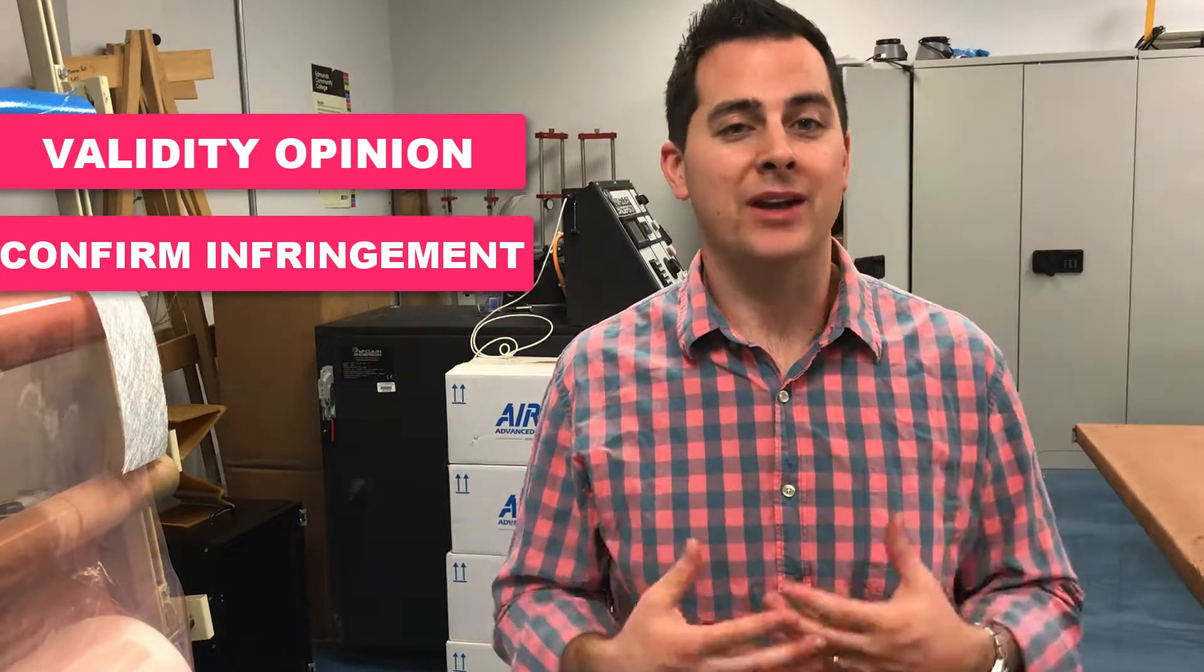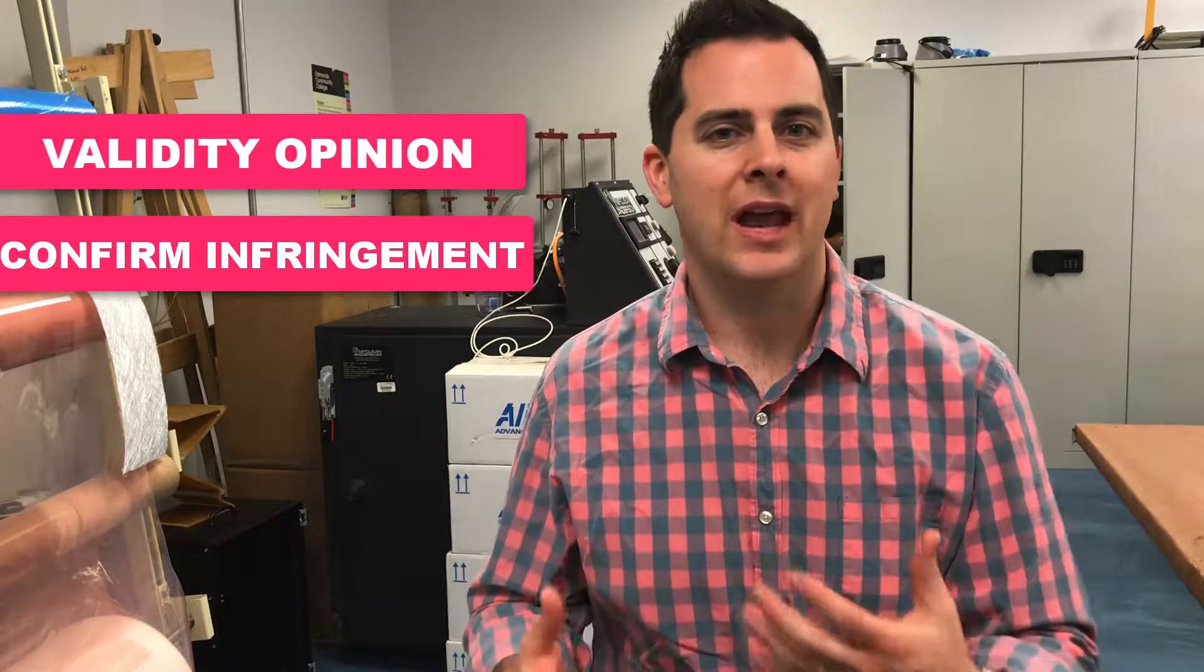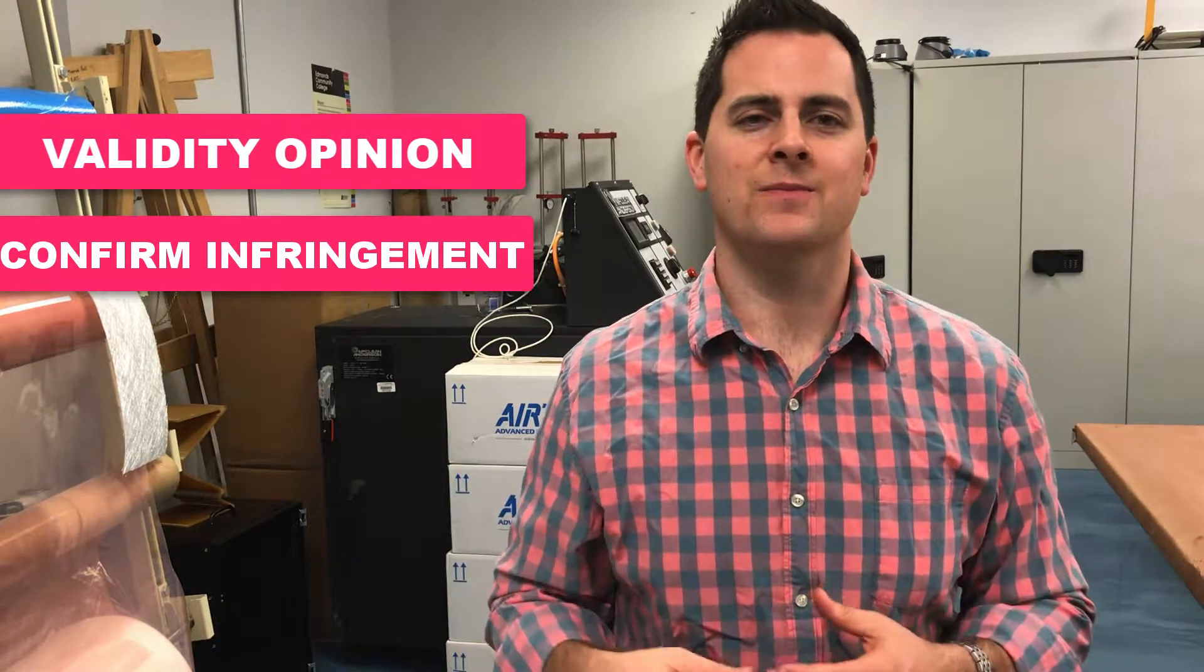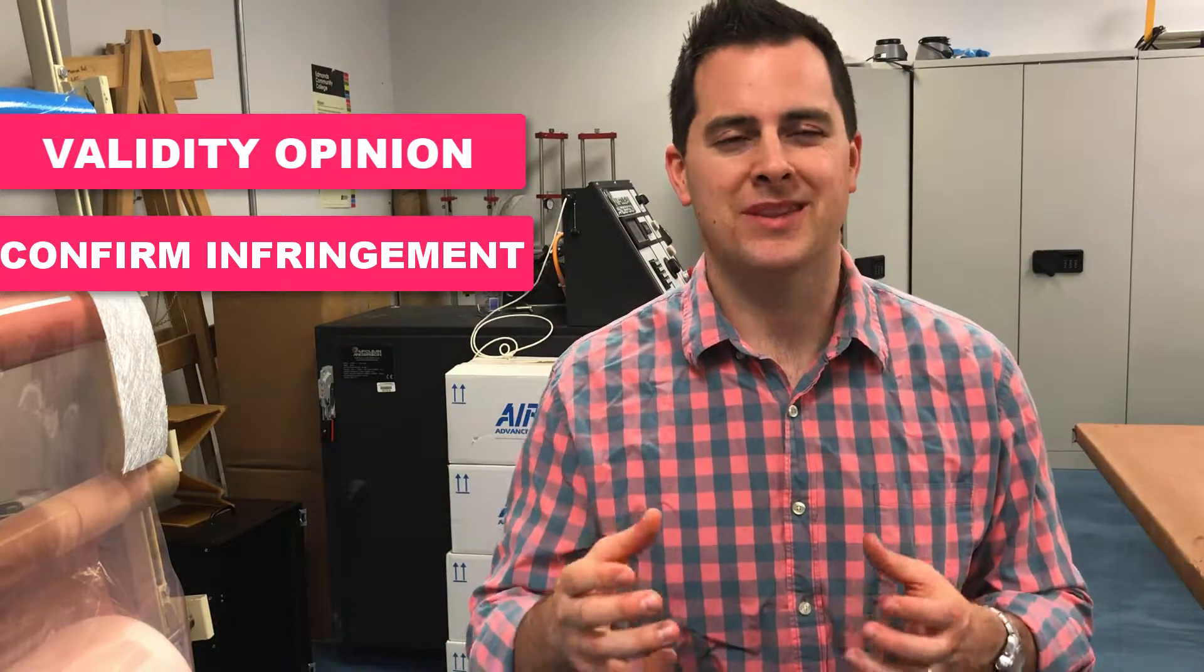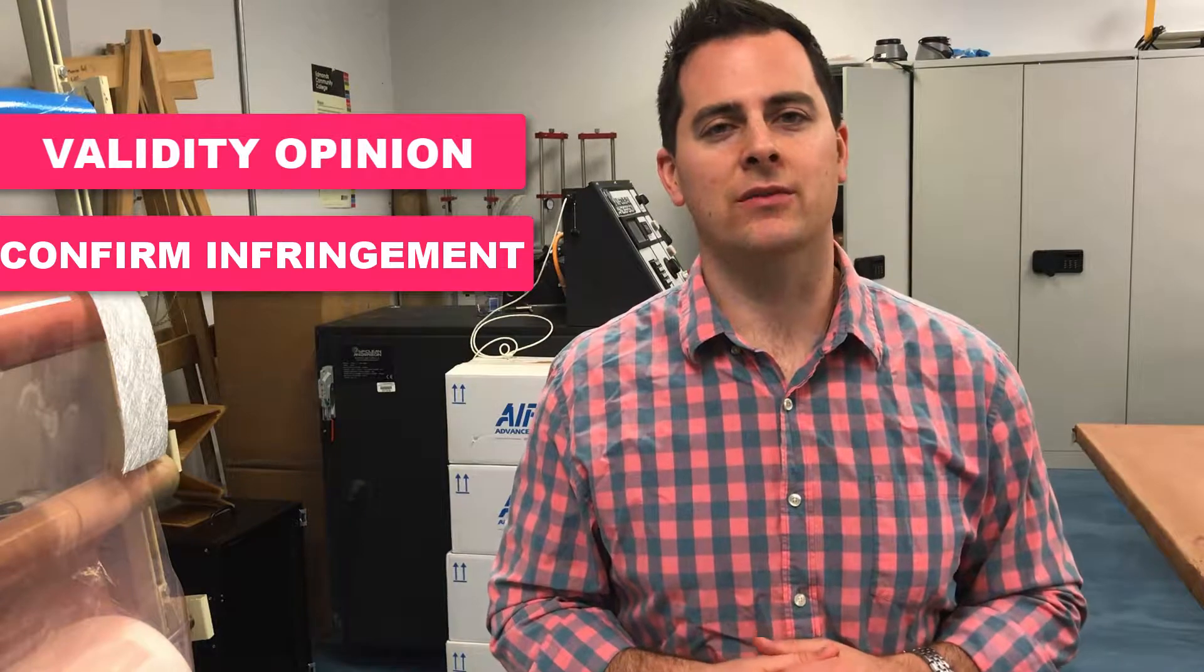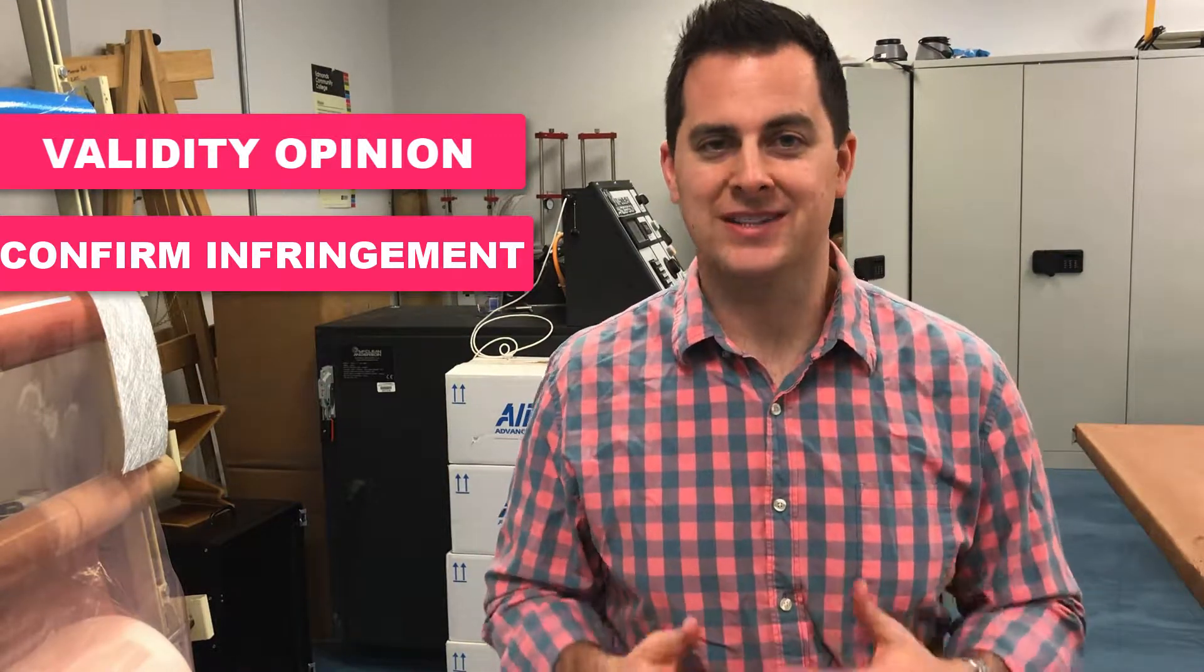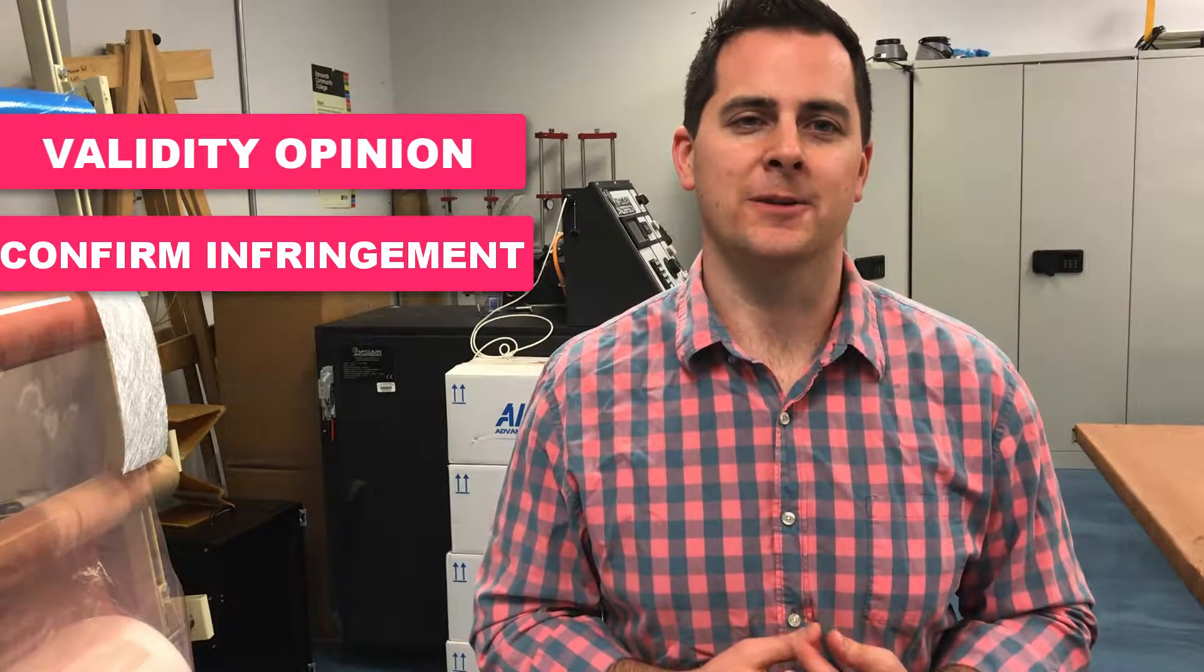The second thing to do if you've got a valid patent is to make sure there's actually infringement. A lot of times patent holders get emotional and get upset when they see things being sold on Amazon that look awfully like their invention, like their product, but they may not actually be infringing their claims of the invention. Work with a patent attorney carefully to make sure before you go out there and assert your rights you actually have a true infringement going on.